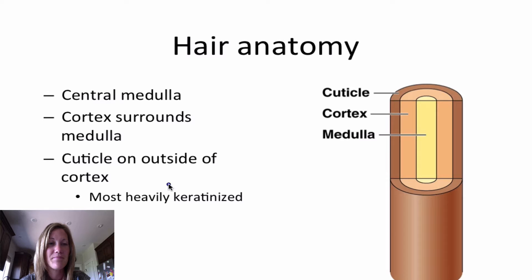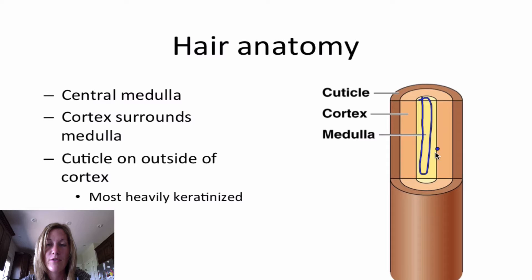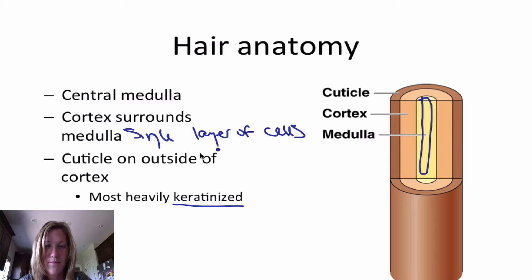Looking at hair anatomy: the central medulla is the innermost part of the hair. The cortex surrounds the medulla — that's the lighter tan color. The cuticle is on the outside of the cortex and is the most heavily keratinized. The cuticle is a single layer of cells shaped like shingles on a house, and it is the most hardened layer.